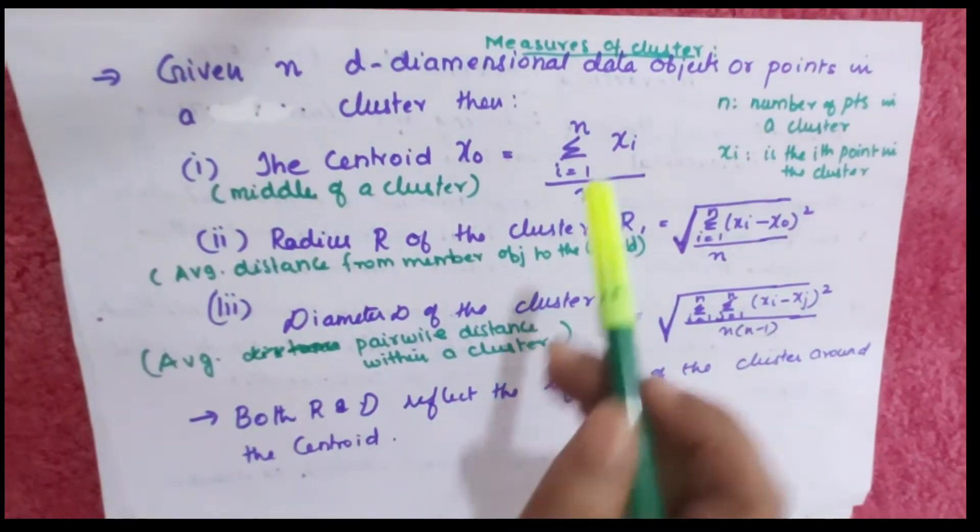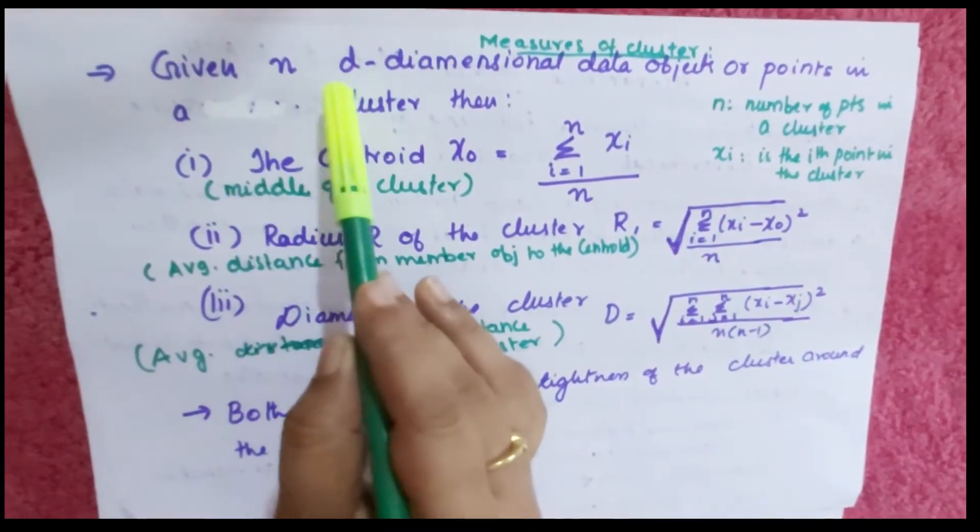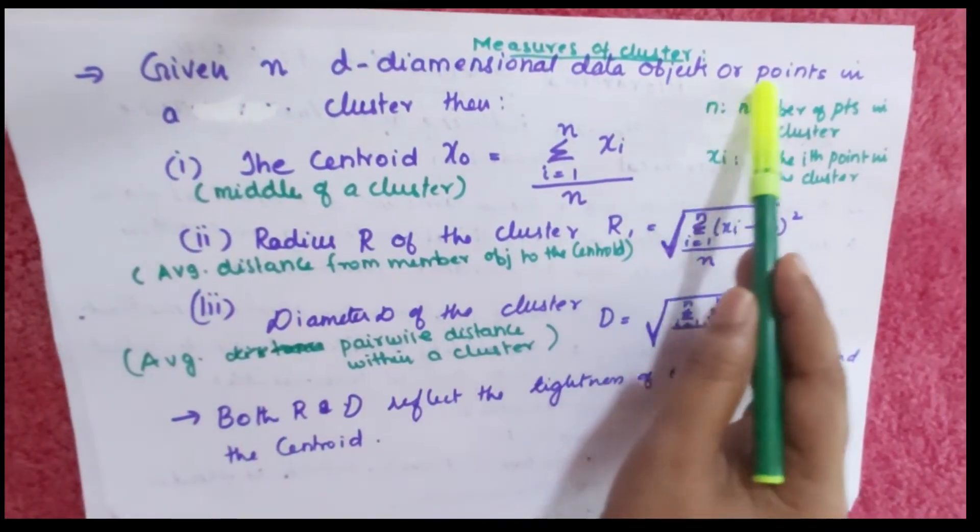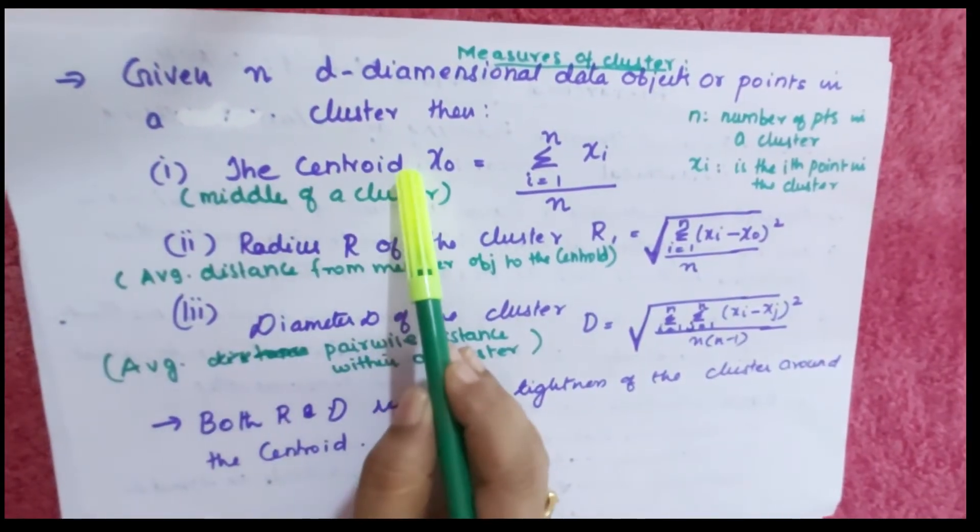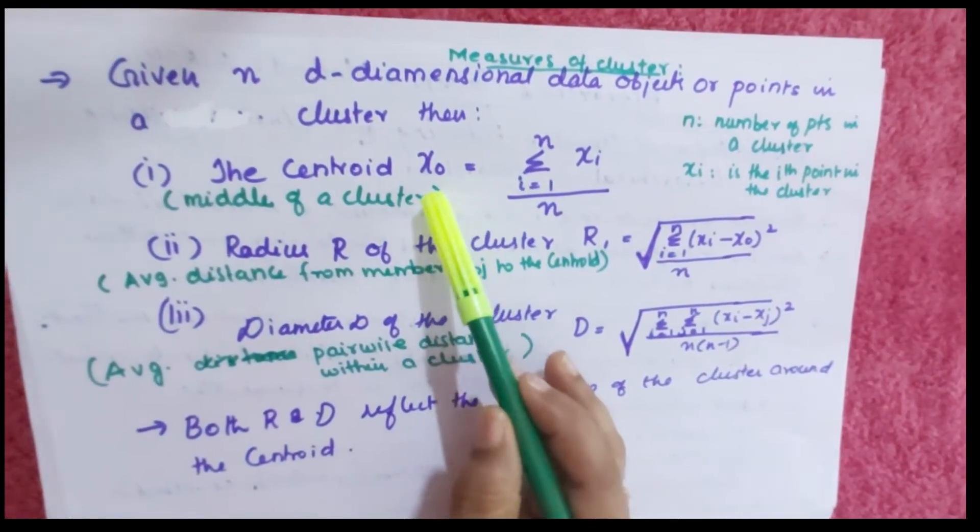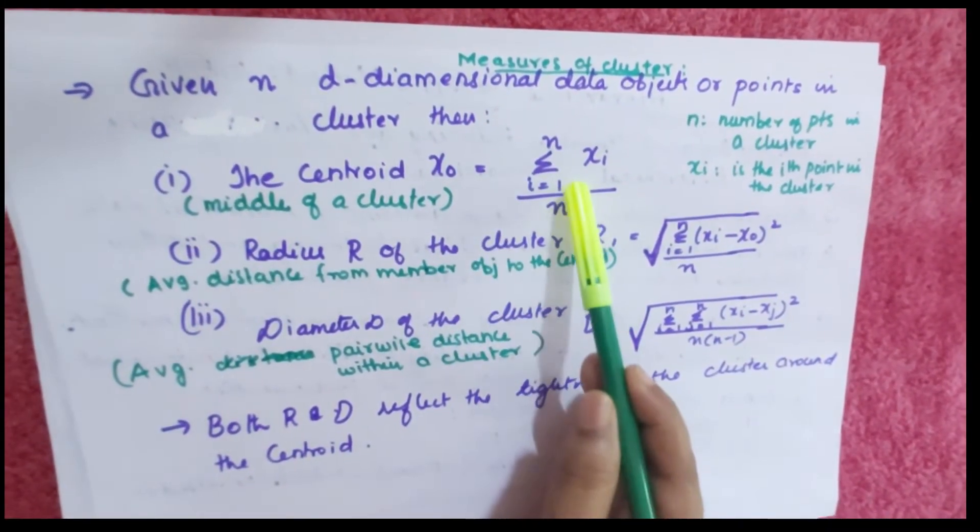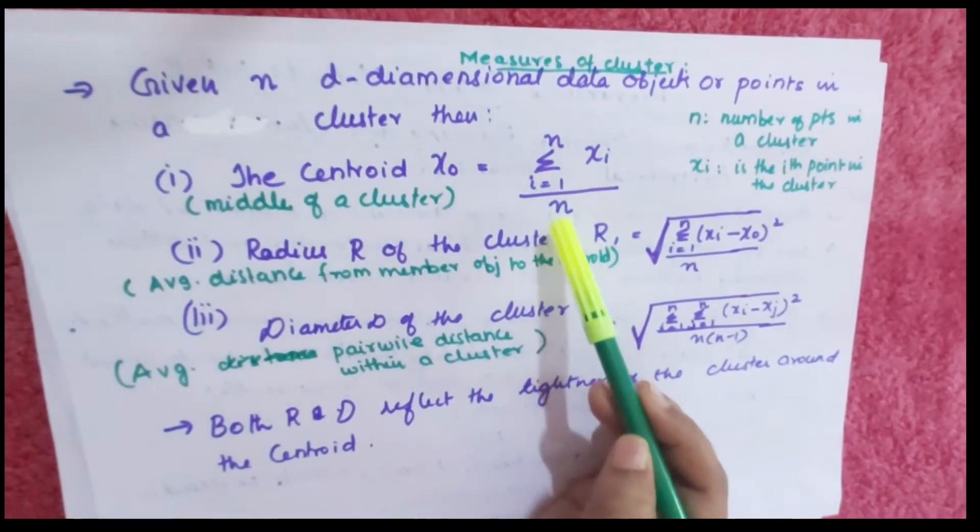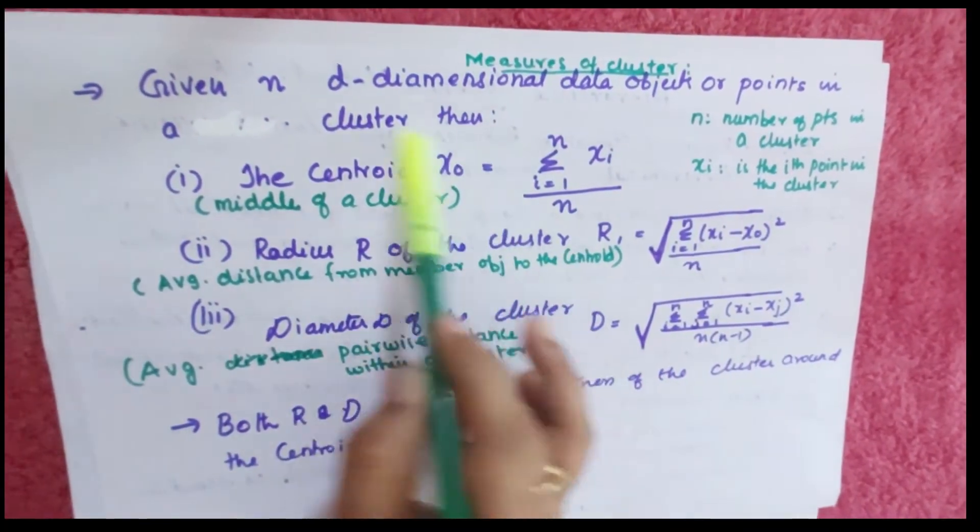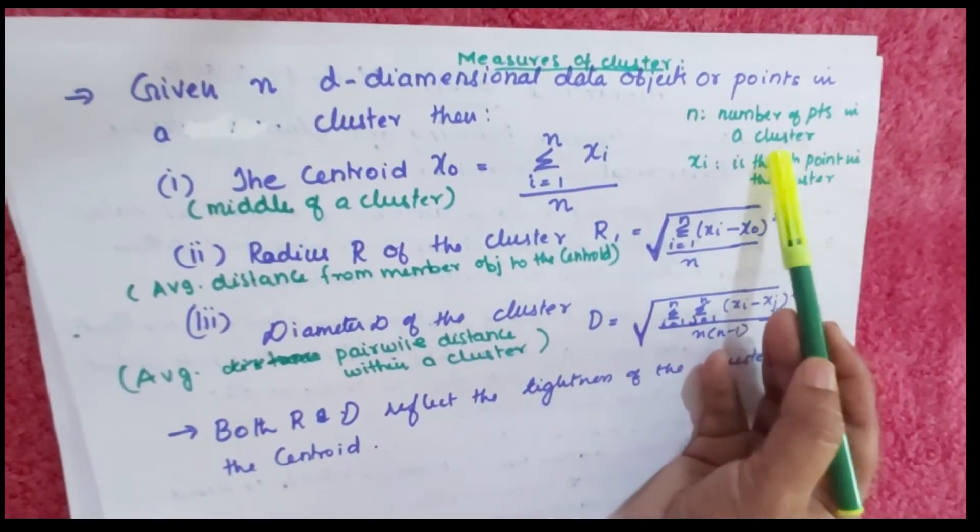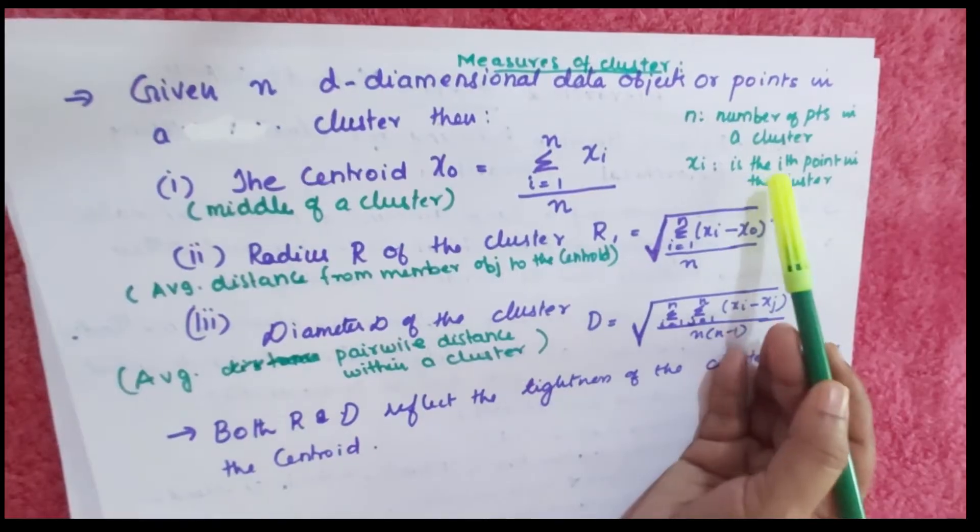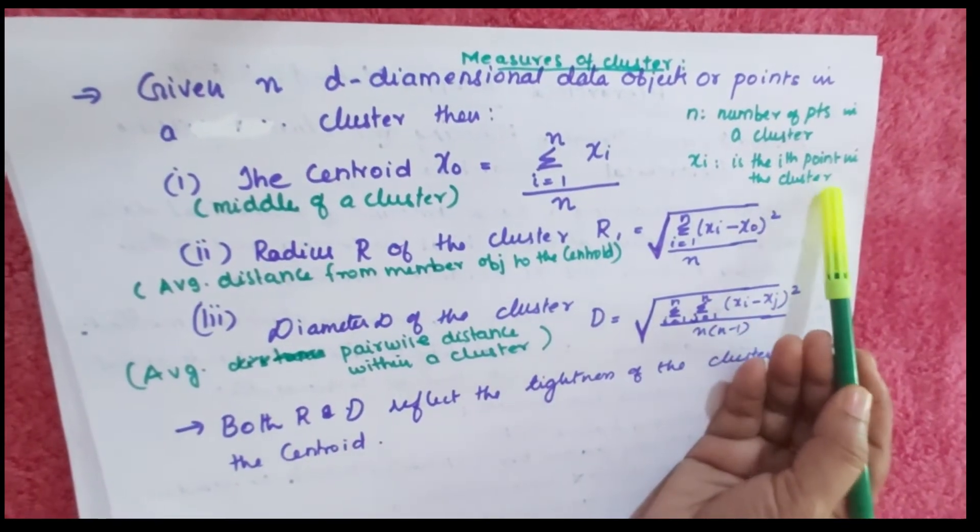Now the measures of clusters. Given n d-dimensional data objects or points in a cluster, the centroid can be calculated using the formula x0 = Σ(xi)/n, where i ranges from 1 to n. The centroid is the middle of the cluster, n is the number of points in the cluster, and xi is the ith point in the cluster.